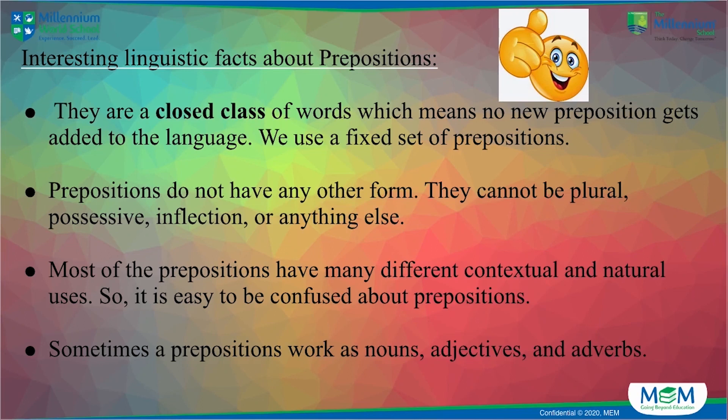Sometimes a preposition works as a noun, adjective or adverb. There are a set of words which can be used as a preposition as well as an adverb — we have this topic even further. For example, here we have 'across' used as a preposition, and the same word in 'this river has no bridge, we have to swim across' — here 'across' is used as an adverb. So yes, there are certain words where prepositions can be used as nouns, adjectives and adverbs too.